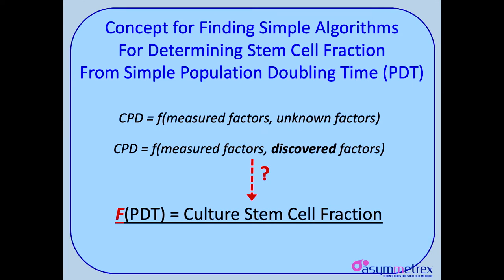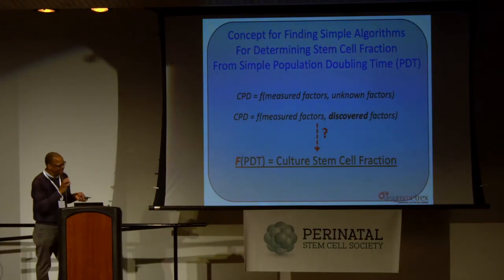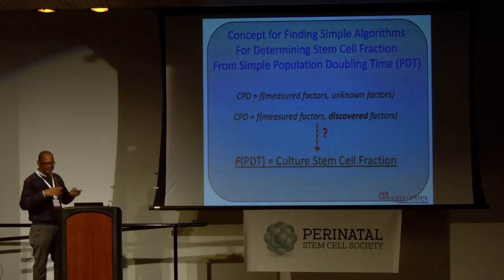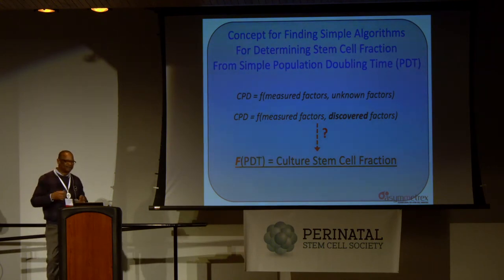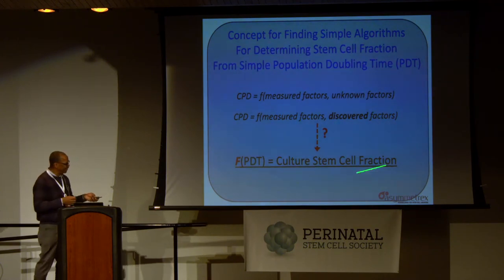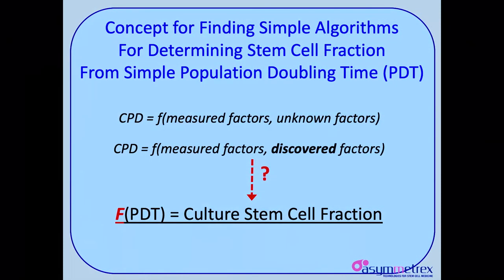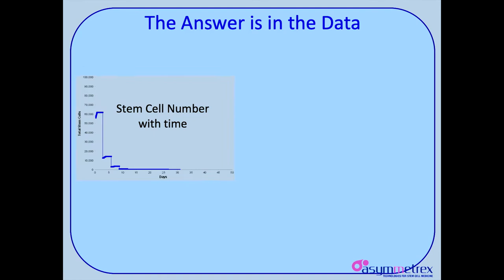We started out with measured factors and unknowns. Now we have measured factors and we have discovered these other factors. I still couldn't figure out how to write an algorithm. But it occurs to us that there should be some function of a simple two- or three-day population doubling study — just grow cells for two days, determine how much they double, and that tells you the stem cell fraction. And what I want to tell you now is that we have found such algorithms, and the answer was in the data.